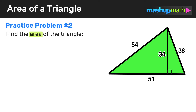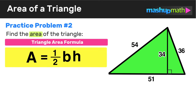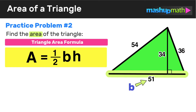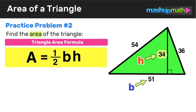Here's practice problem number two. Just like the last example, we have to find the area of the triangle using the formula A equals one half times B times H. This diagram has more sides labeled, but remember, the base is any bottom line of the triangle, so the base is 51. The height is that perpendicular line extending from the base to the vertex of the opposite angle, so the height is 34. To use the area formula, all we need is the base and height — we don't need to use the other labeled sides, 54 and 36.